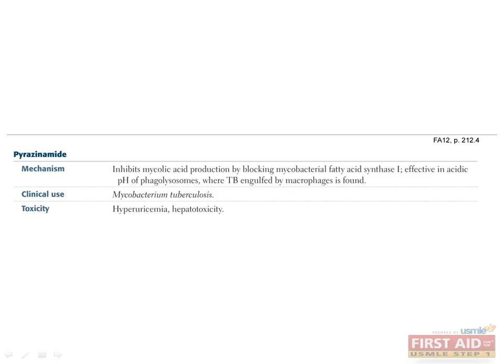Along with rifampin and isoniazid, pyrazinamide is another drug used to treat M. tuberculosis. It works by blocking mycobacterial fatty acid synthesis and is particularly effective in the acidic pH of phagolysosomes, where TB is found after being engulfed by macrophages. Its toxicities include hyperuricemia and hepatotoxicity.